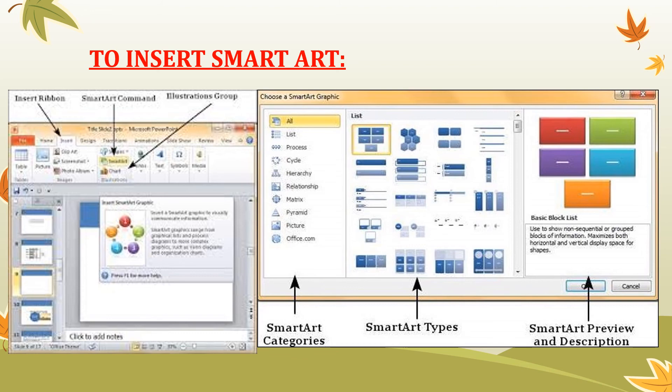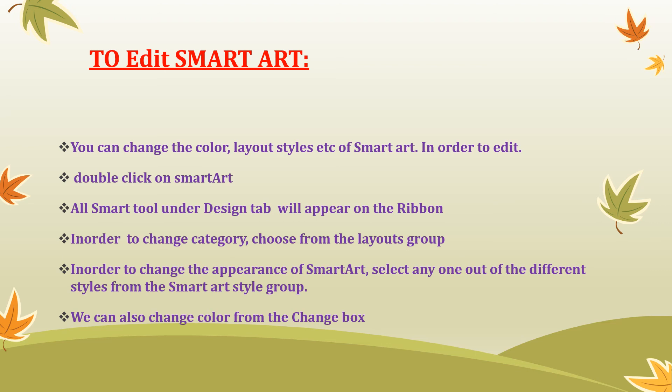To edit smart art, you can change the color, layout, and style. To do so, double click on the smart art — a new smart art tools design tab will open and all tools will appear on the ribbon. To change the category, choose from the layout group. To change the appearance, select any one of the different styles from the smart art styles group. You can also change the color from the change colors box.